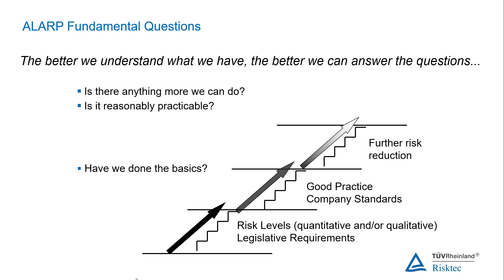We're generally quite comfortable with the idea that the type and methods of risk assessment should be proportional to the level of risk. Given that assessing whether we are ALARP should not be viewed as something separate to the overall risk assessment, then should it not also follow that in answering the question 'does it make sense to do so — i.e. is it practicable' — the same basic principles should also apply? That the effort and detail we put into deciding what more we can and should do to further reduce risk should also be proportional.